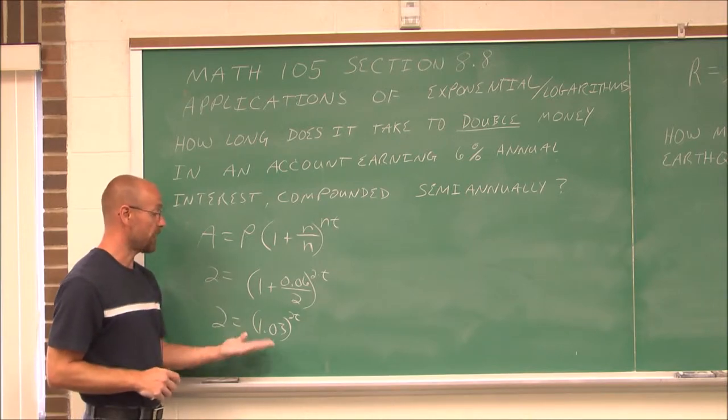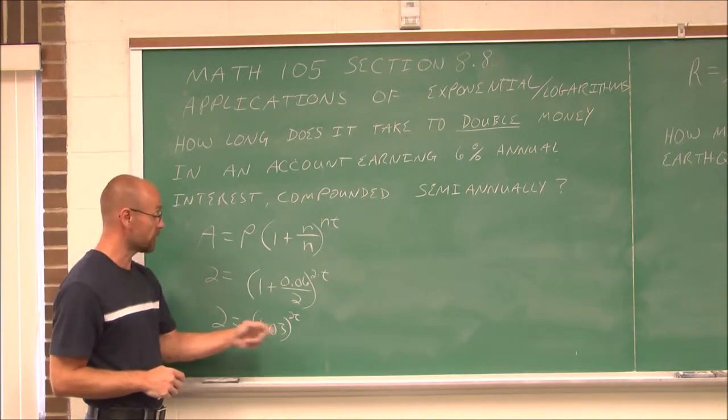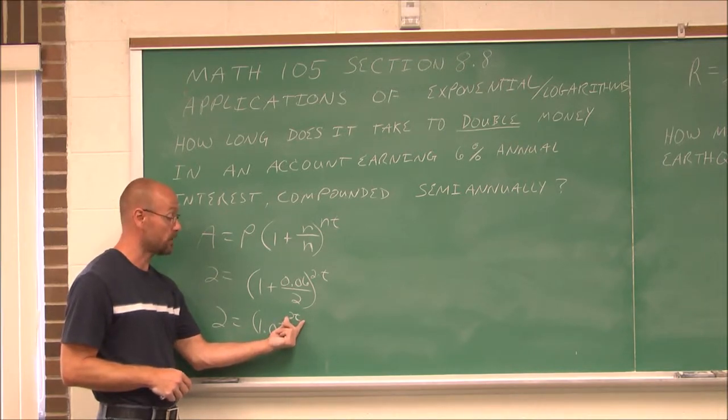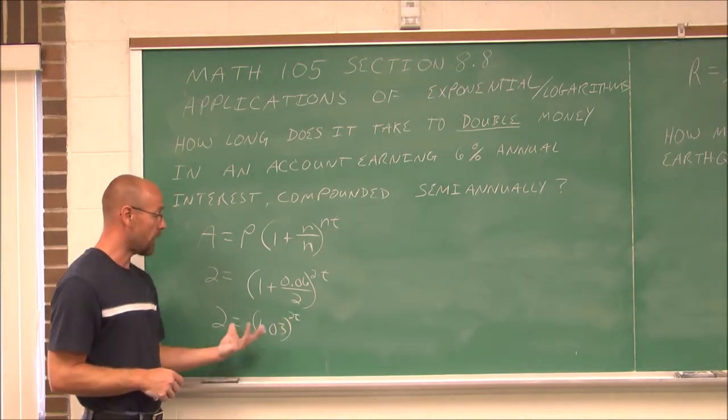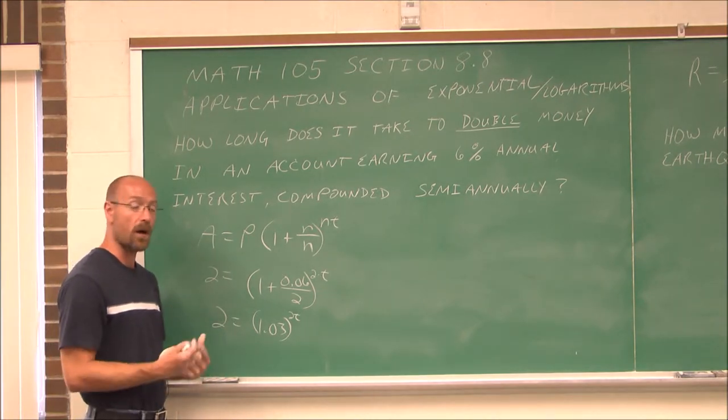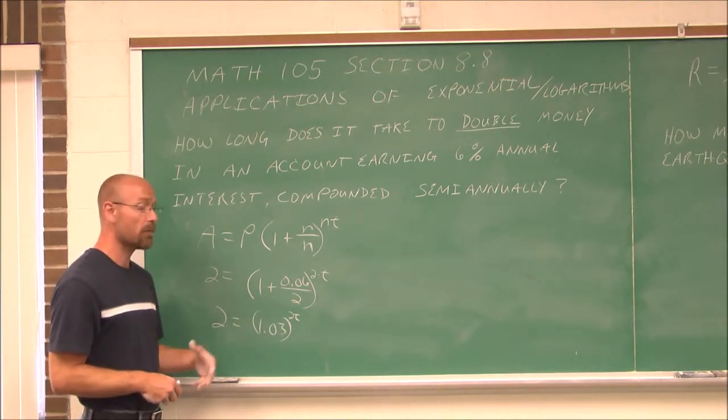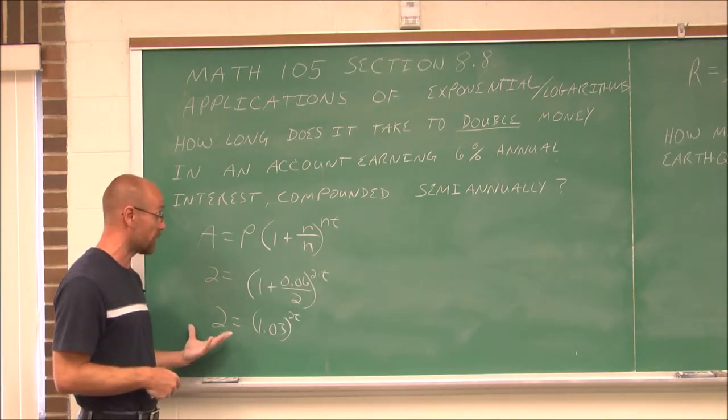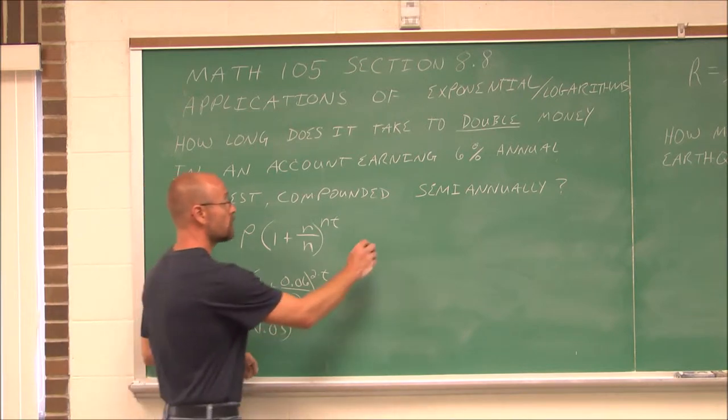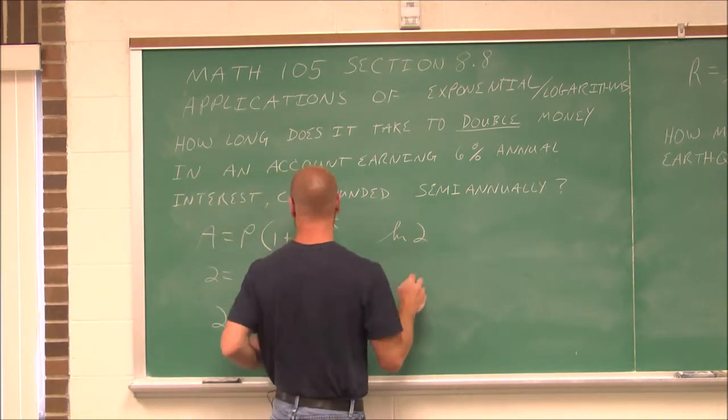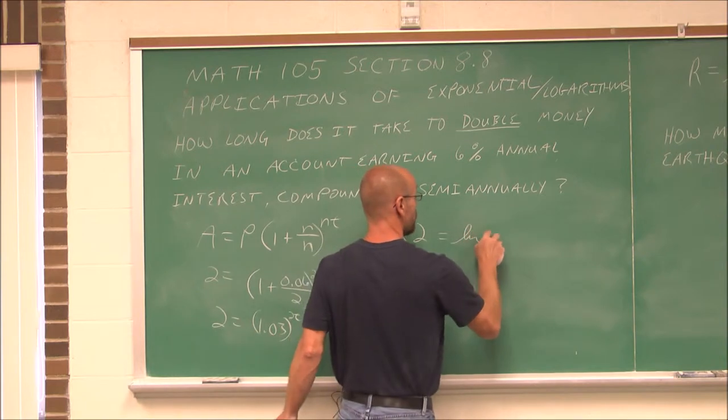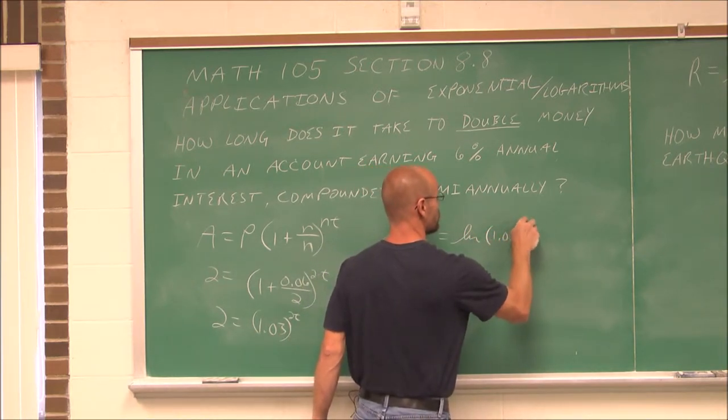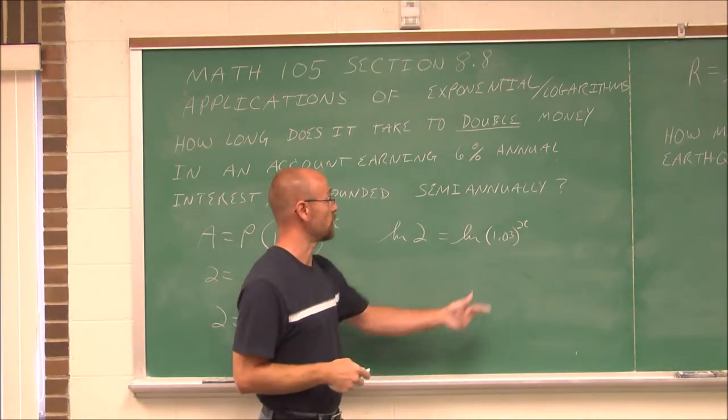Now that I've done that simplifying, now I can solve for this exponent. I've got to get it out of the exponential position. I can do that by introducing a logarithm. I can undo exponents with logarithms. I'm going to use the natural log. What I do to one side, I do to the other. So I'm going to take the natural log of the left side of my equation and the natural log of the right side.